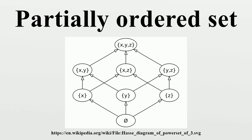In other words, a partial order is an antisymmetric preorder. A set with a partial order is called a partially ordered set. The term ordered set is sometimes also used, as long as it is clear from the context that no other kind of order is meant. In particular, totally ordered sets can also be referred to as ordered sets, especially in areas where these structures are more common than posets.